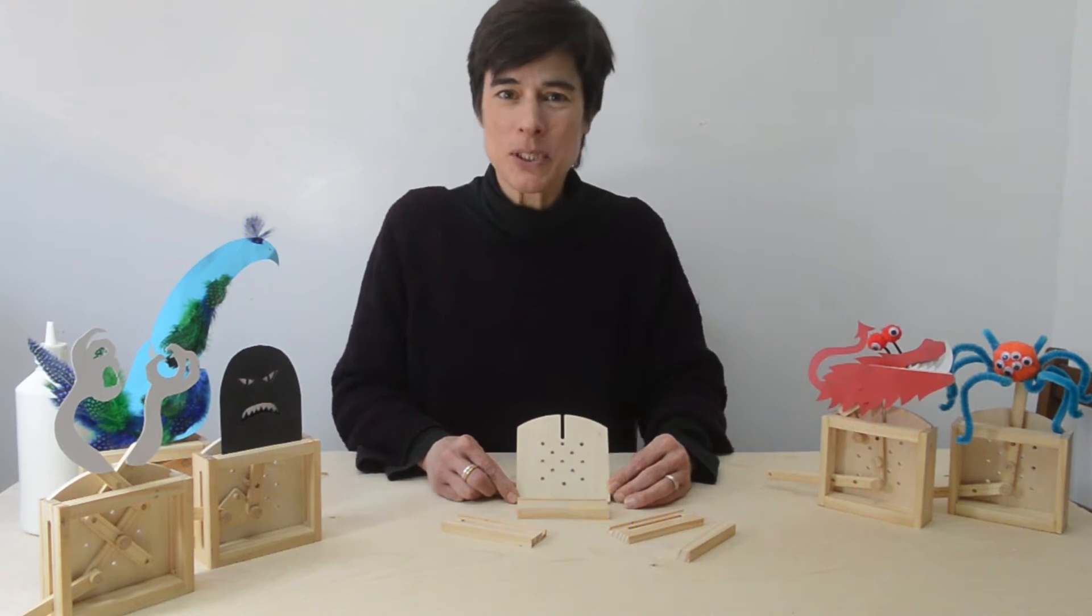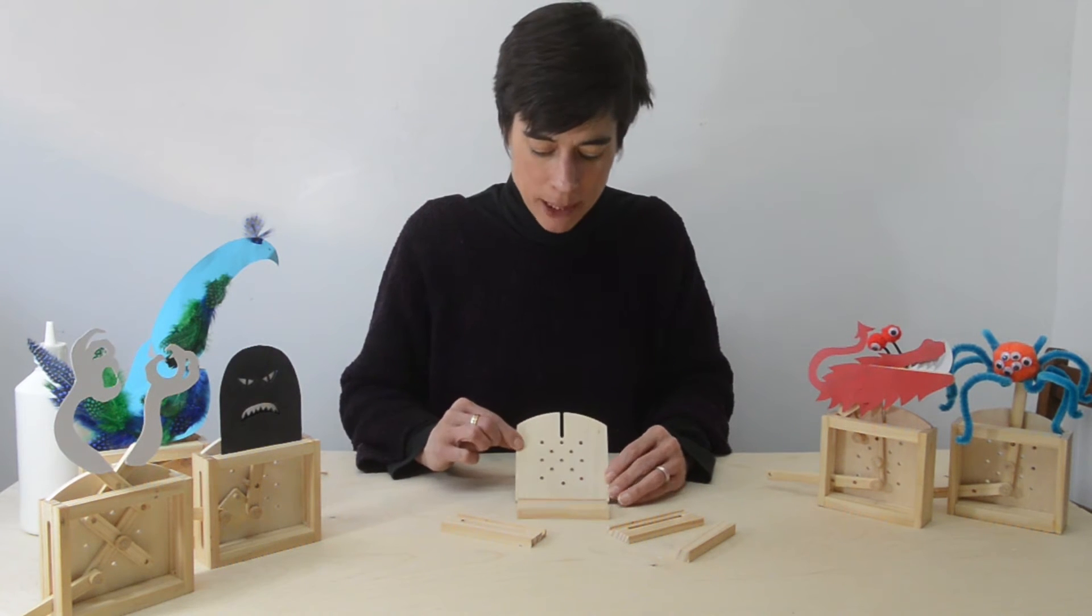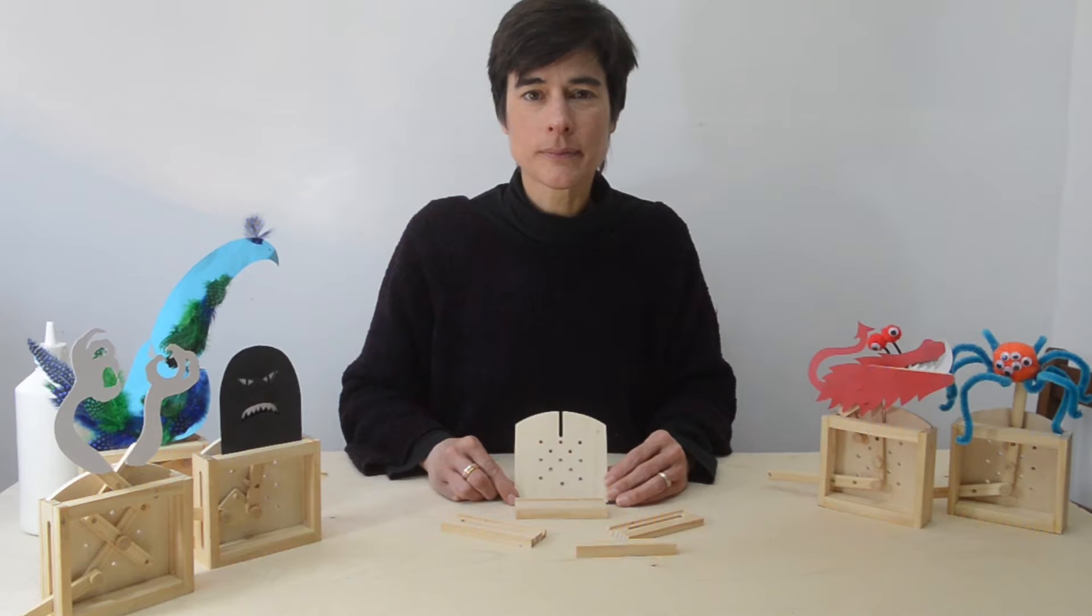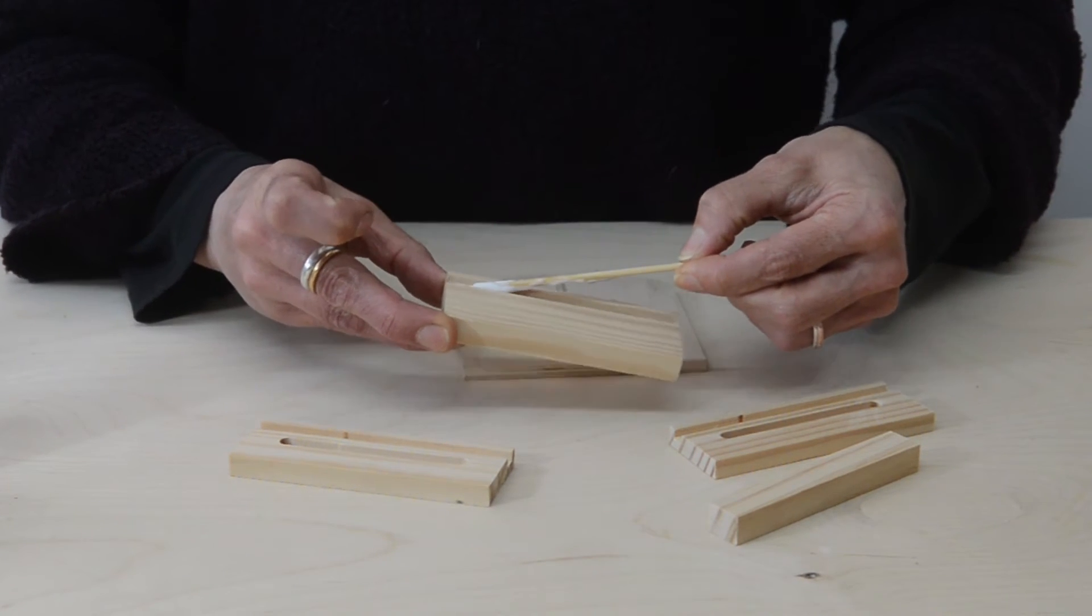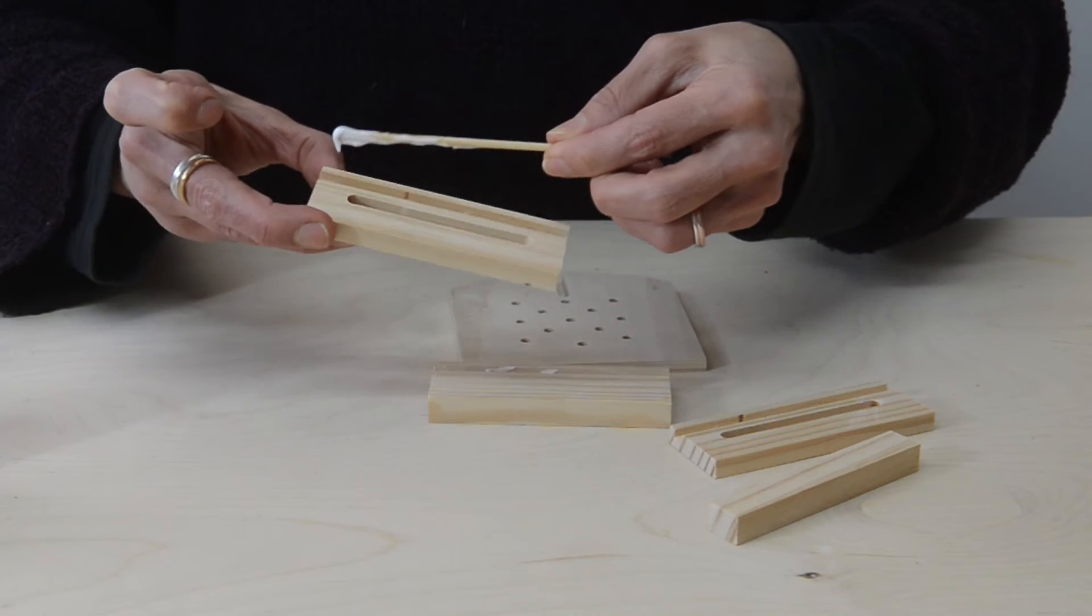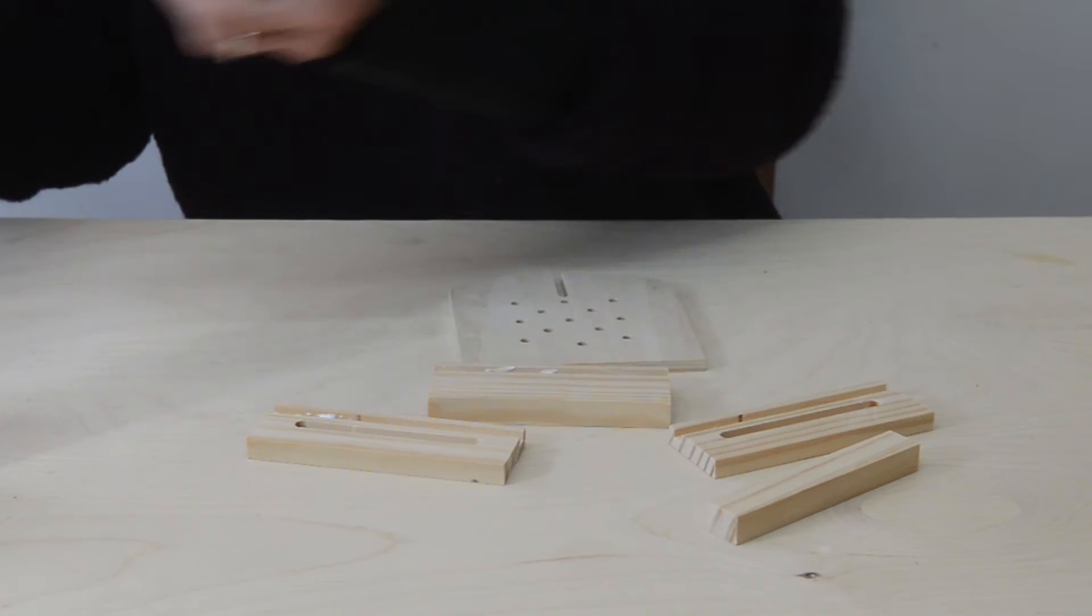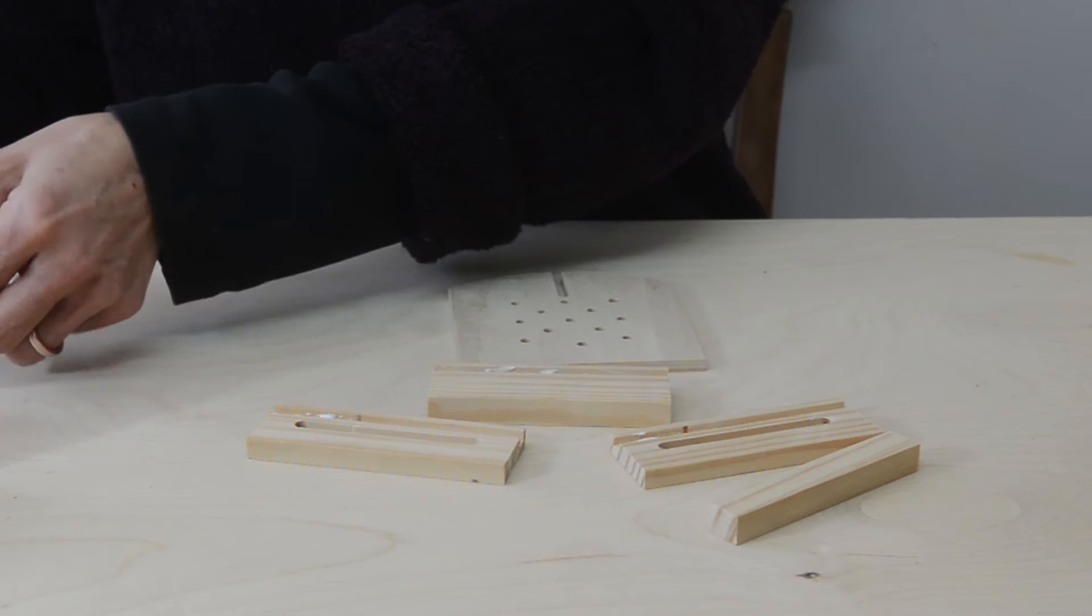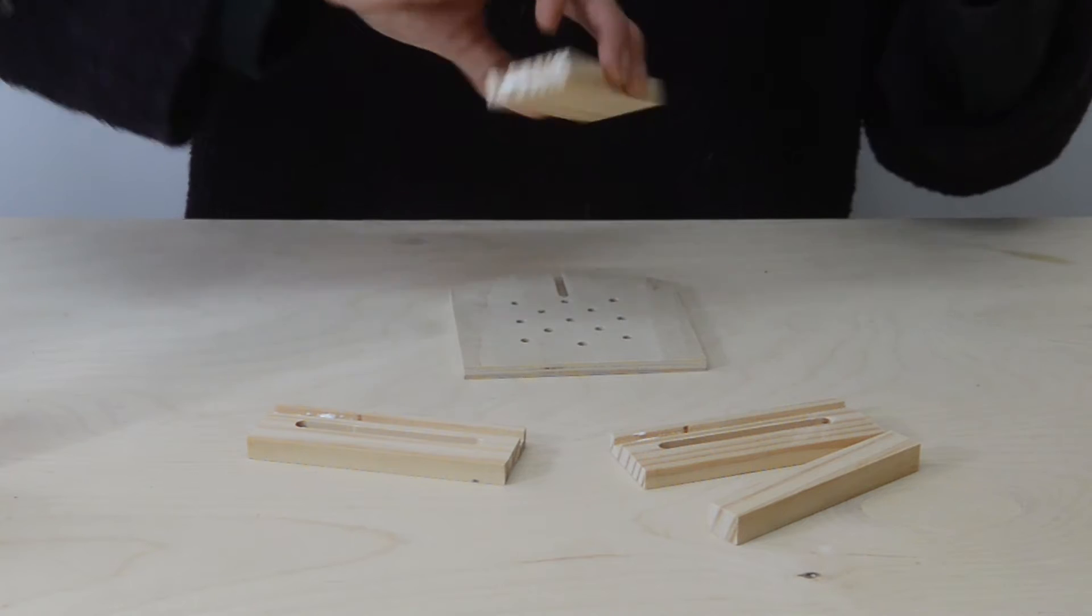Now we've seen the monster machines in action we're going to set about making some for ourselves. So you're going to need a backboard, a base, two sides and a top rail. So first of all I'm going to put a bit of glue in these grooves. And I'm also going to put a bit of glue just on the ends of the base piece.